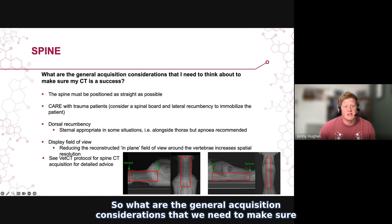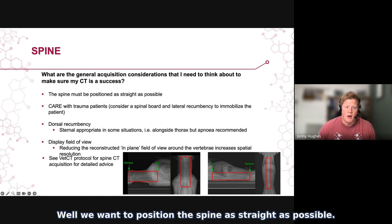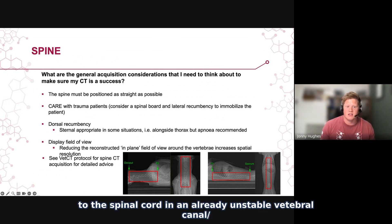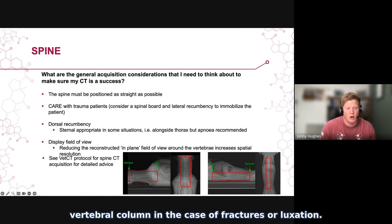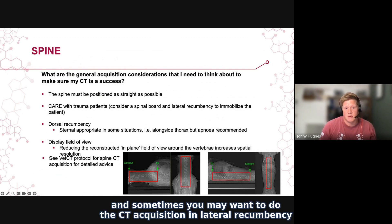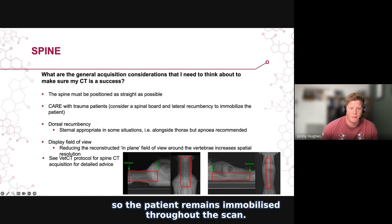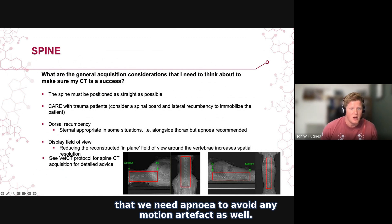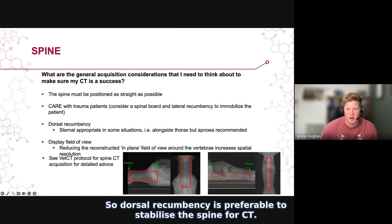What are the general acquisition considerations to ensure CT success for the spine? We want to position the spine as straight as possible. We have to take care with trauma patients because we don't want to cause extra damage to the spinal cord in an already unstable vertebral column in the case of fractures or luxation. We can consider a spinal board in these cases, and sometimes you may want to do the CT acquisition in lateral recumbency so the patient remains immobilized throughout the scan. Otherwise, dorsal recumbency is preferable. Sternal recumbency is possible in some situations, but we need apnea to avoid motion artifact. Dorsal recumbency is preferable to stabilize the spine for CT.